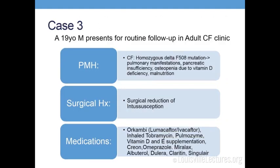The last case is a 19-year-old male presenting for routine follow-up in an adult CF clinic. He overall denies new symptoms, but was recently hospitalized for fever and received IV antibiotics. He doesn't really know what he had, doesn't know the diagnosis, doesn't know what he was sent home on, but says he's probably fine. His past medical history is notable for CF — the homozygous delta F508 mutation — with subsequent complications including pulmonary manifestations, pancreatic insufficiency, osteopenia due to vitamin D deficiency, and malnutrition. When you ask him about his medications, he has no idea what he takes, how to obtain them from the pharmacy, or how to get refills. His grandmother goes to pick them up, puts them in a pillbox for him, and he just takes them from there.